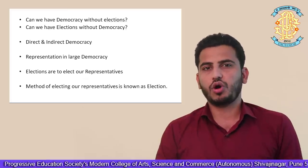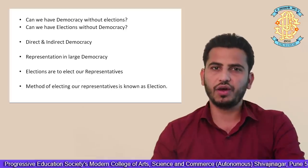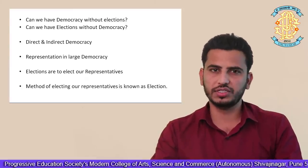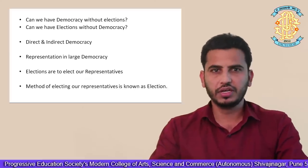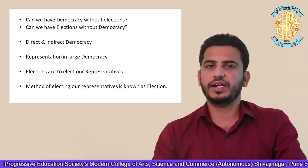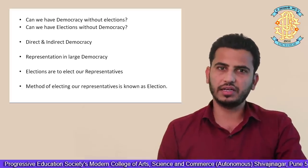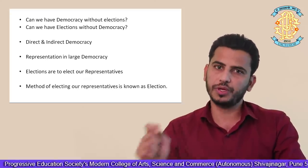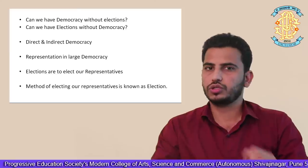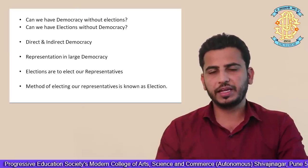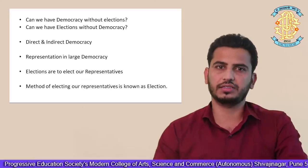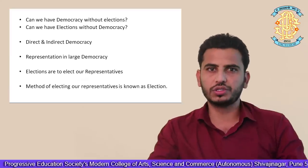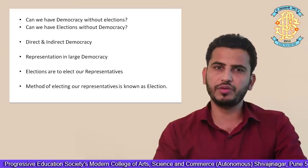When we talk of democracy, we have already seen that democracy is divided into two types. One is direct democracy and second is indirect democracy. In direct democracy, people directly participate in the decision-making process, whereas in indirect democracy, people's representatives take decisions on behalf of people. Direct democracy is practicable in countries which are small in size and population. However, in a country like India where the population is huge, it becomes quite difficult to implement direct democracy.